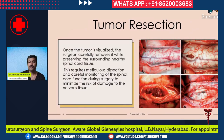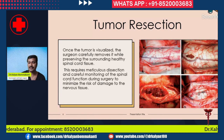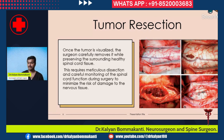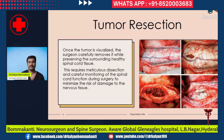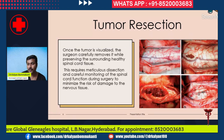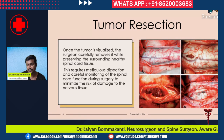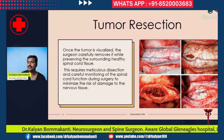For tumor resection, we open the dura mater. You can see the dural flaps which have been cut and pulled apart. This is a spinal cord tumor — you can see the tumor bulge. We have made a small myelotomy, a small opening on the spinal cord. Once the opening is made, the tumor comes into picture. You can see this grayish-red color tumor. We have also preserved the central vein, which is a major vein near the tumor.